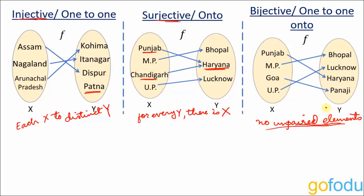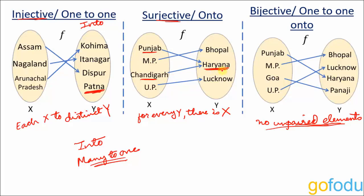Besides these three, there are two other classification types: into functions and many-to-one functions. An into function means at least one element in Y is not mapped to any element in X — like Patna being unmapped, making that function one-to-one into. Many-to-one means two elements in X map to the same element in Y, like Punjab and Chandigarh both mapping to Haryana. That function is many-to-one onto.